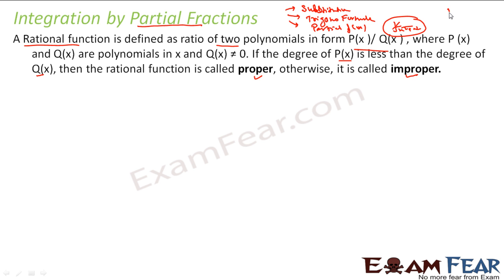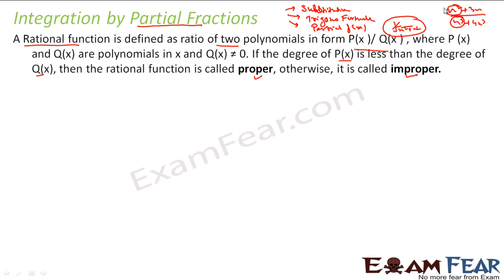For example, if the numerator is x² + 3x and the denominator is x³ + 4x, the degree of the denominator is 3 and the numerator is 2 — this is a proper form. If it is the other way, say x³ + 2x + 1 by x², with degree 3 in the numerator and degree 2 in the denominator, this is called an improper form.